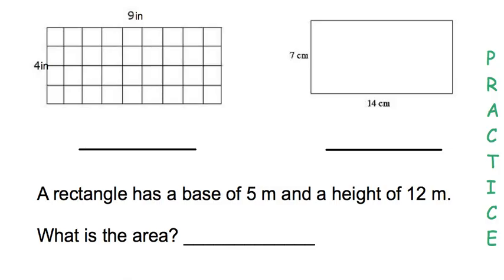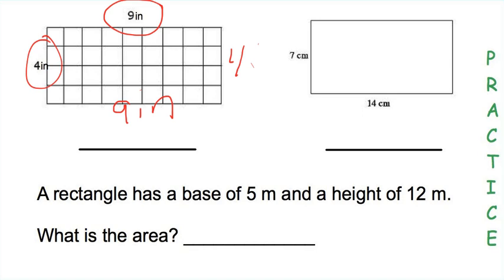For these practice problems we are going to find the area of rectangles again. Base times height — rectangles are easier than parallelograms because you've got two pairs of parallel sides. The base could also be on the top, so we've got 9 here. The height of 4 on the side also means 4 on the other side. So 9 times 4 is 36 inches squared — that's the area of that rectangle.